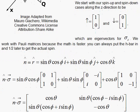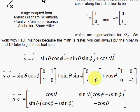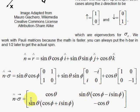We can figure this out by looking at the matrix multiplied out in each case. The cosine of theta and minus cosine of theta give you the diagonal components — upper left and lower right. For the off-diagonal components, they come from the first two terms. Notice that sine of theta is common to both, so we factor it out. The lower left is cosine of phi plus i sine of phi, and the upper one is cosine of phi minus i sine of phi.